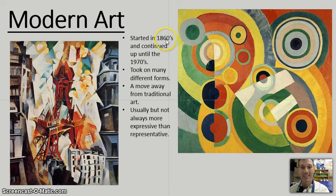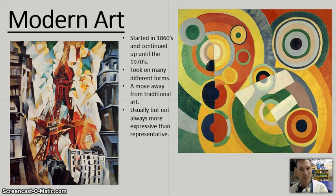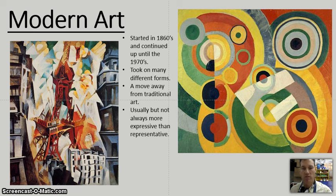Modern art started in about the 1860s and continued up until about the 1970s. During this time frame, it took on many different forms, but the general idea was a move away from traditional artwork. Prior to the 1860s, there was a very pointed way that artists made art, and after that time, during kind of the Industrial Revolution, artists wanted to move away from what had already been done. They wanted to be more expressive, more experimental, and it tried to change the way that artwork was really perceived by the general public.